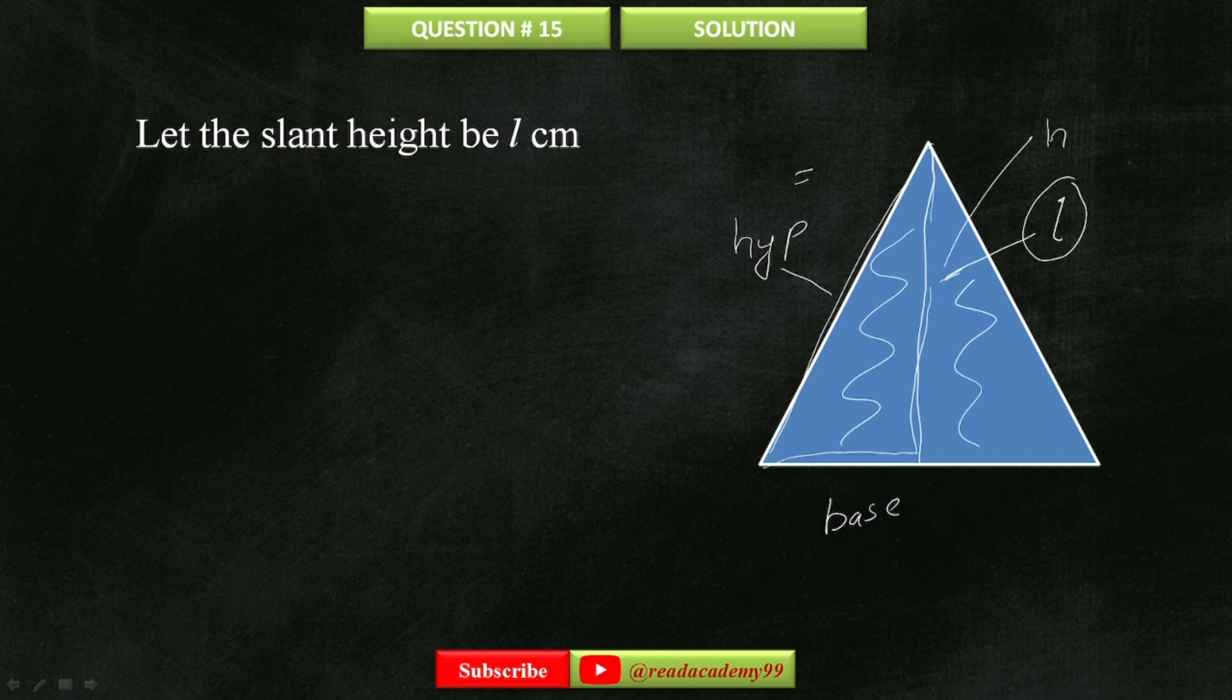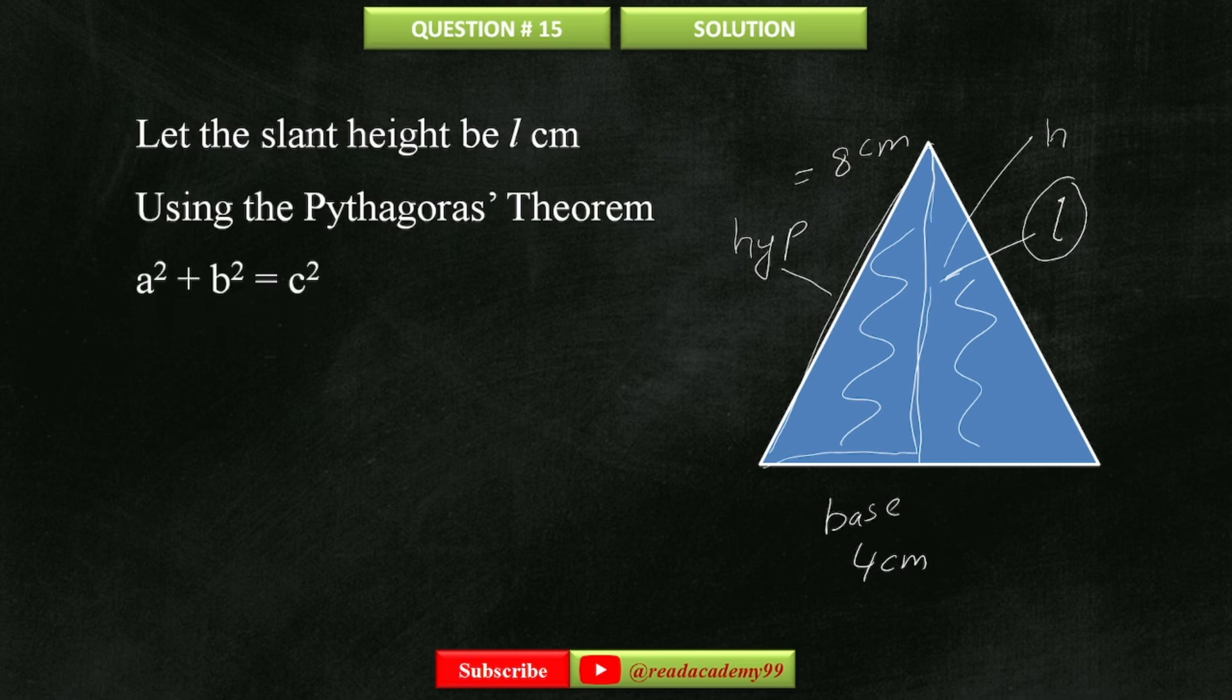As we know that the hypotenuse is eight centimeters and the base is half of eight centimeters, which is four centimeters. To find the height, I'm going to use the Pythagoras's theorem, which is the sum of the squares of the height and the base equals to the square of the hypotenuse.